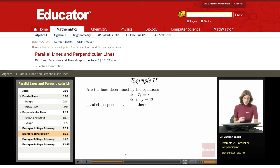In order to evaluate what's going on with the slopes, I need to put these in slope-intercept form. So I'm going to look first at this equation, 2x minus 7y equals 8. First I want to put it in the form y equals mx plus b.